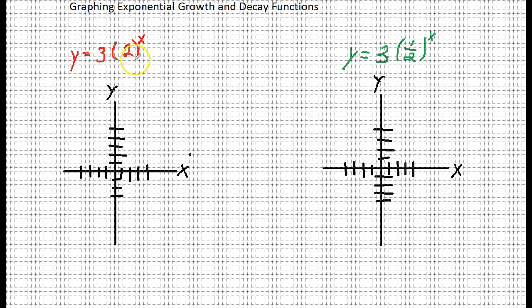Now this first graph we have exponential growth. How do I know we have growth? Because the number inside the parentheses we have y equals a times b to the x power. When b is larger than 1 you have growth.